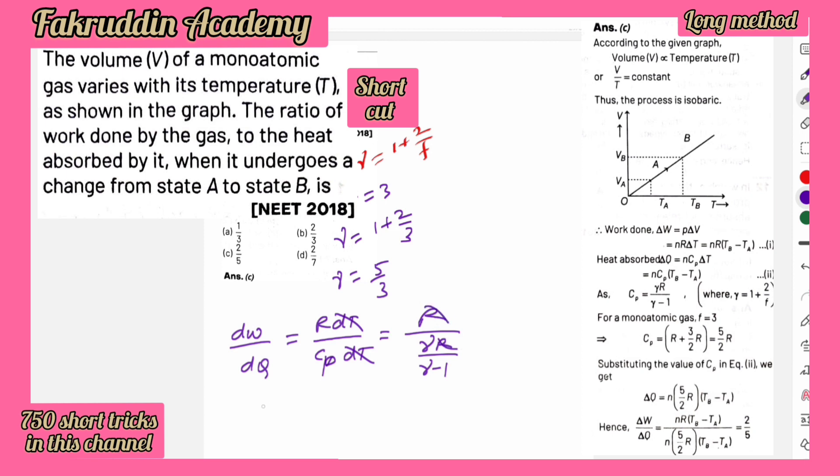So Cp is equal to gamma R by gamma minus 1. Therefore we can cancel out R here and finally there is a shortcut formula ready to solve here, that is dW by dQ is nothing but gamma minus 1 by gamma. And gamma we got 5 by 3, so we write 5 by 3 minus 1 by 5 by 3. So it is nothing but 2 by 3 by 5 by 3, so 3, 3 gets cancelled, so 2 by 5 is going to be an answer.